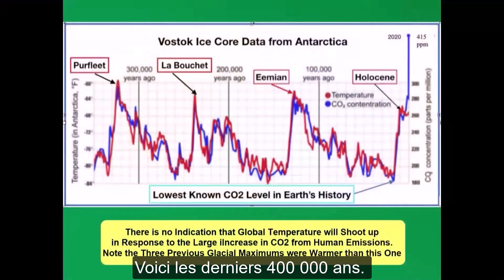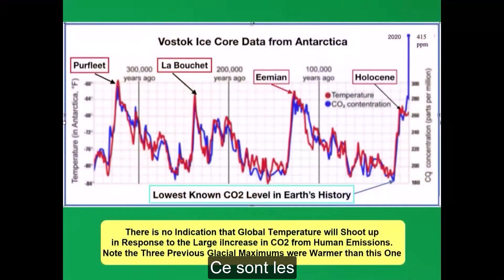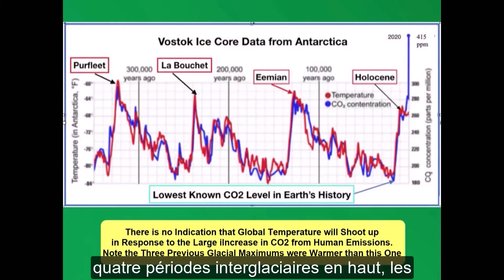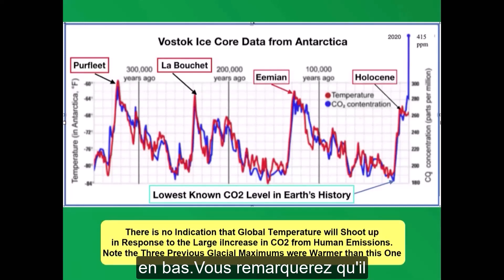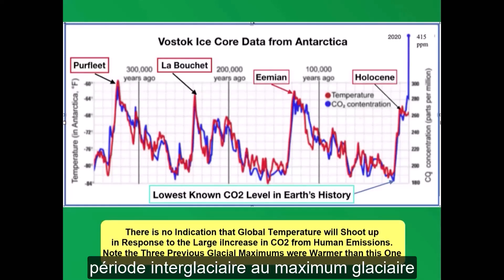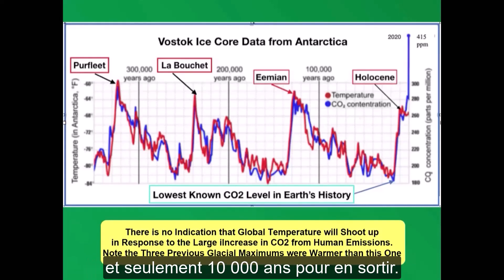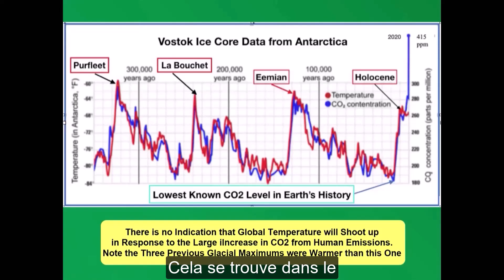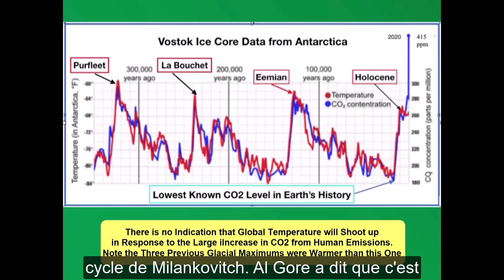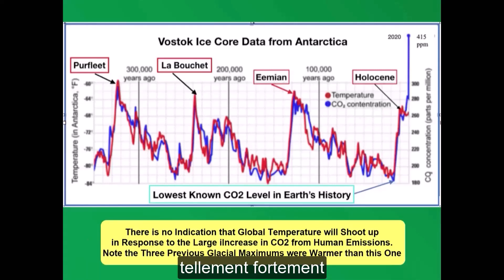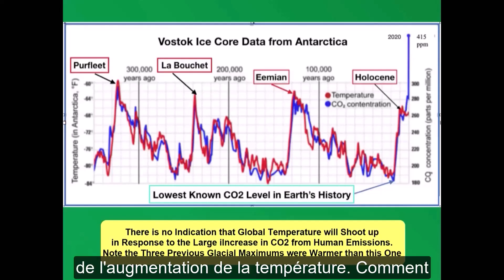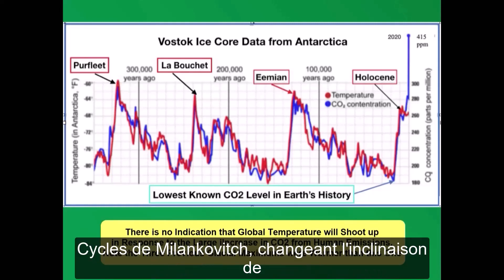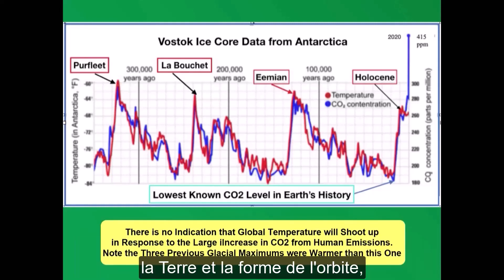This is the last 400,000 years. These are the four interglacial periods on the top and the four glacial maximums on the bottom. It takes 80,000 years to go from the interglacial period into the glacial maximum, and only 10,000 years to come back out of it. This is the Milankovitch cycle. Al Gore said it's obvious, because CO2 and temperature are so strongly correlated, that CO2 must be the cause of the temperature increase. But how would the gravity of Jupiter and the Milankovitch cycles — changing the tilt of the Earth and the shape of the orbit — affect CO2?